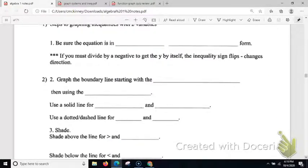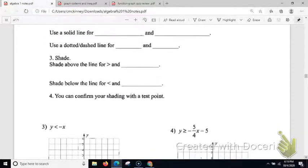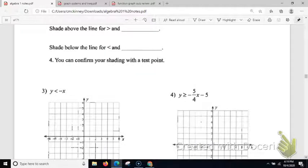So back down here to shading, you might say, if I have to shade, then how do I know where to shade? Well, we're going to shade above the line for greater than and greater than or equal to. And we're going to shade below the line for less than and less than or equal to.